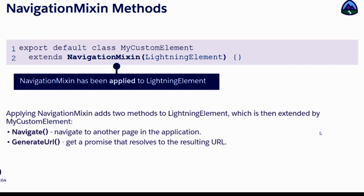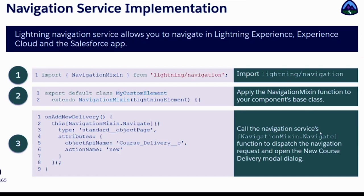NavigationMixin provides exactly two methods. One is navigate and the other is generateUrl. Navigate will take you to that URL — like clicking a hyperlink that takes you to a particular address. Whereas generateUrl only generates the URL and returns it to you; it does not take you to the URL. You can use that URL in an img tag, hyperlink tag, or link tag — wherever you want. The job of generateUrl is only generating the URL, not navigating to it. If you want to go to a particular URL, use navigate.